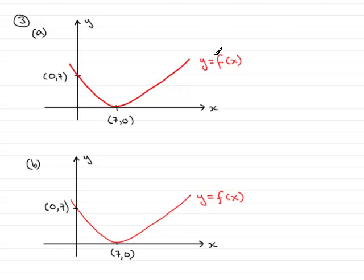In the first question, we're asked to draw the graph of y equals f of x plus 3 and state the minimum point and where it crosses the y-axis.